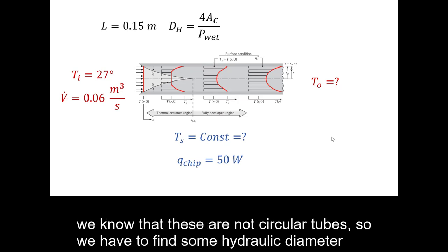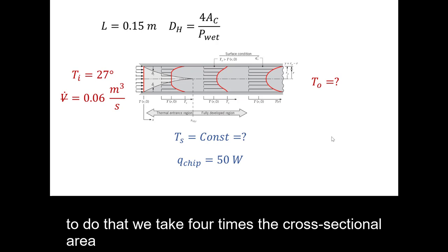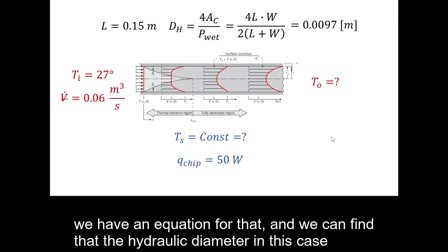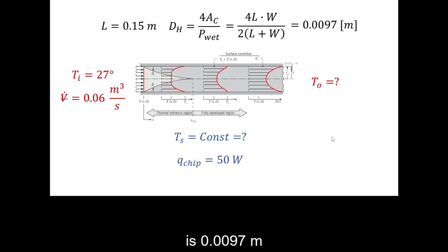We know that these are not circular tubes, so we have to find some hydraulic diameter. To do that, we take 4 times the cross-sectional area divided by the wetted perimeter. We have an equation for that, and we can find that the hydraulic diameter in this case is 0.0097 meters, or 9.7 millimeters.